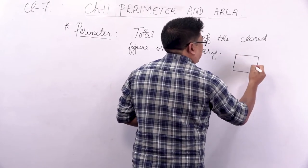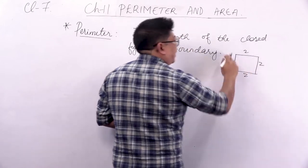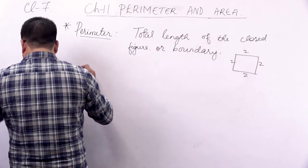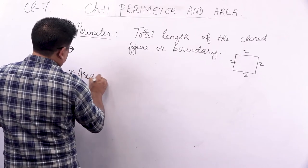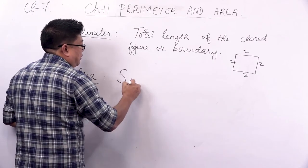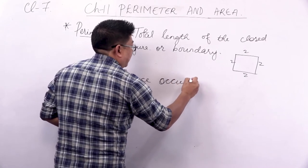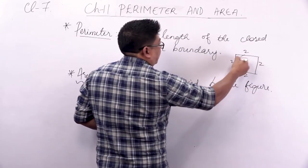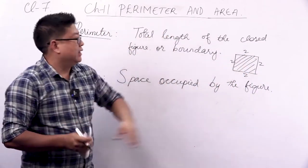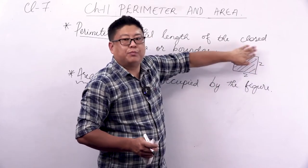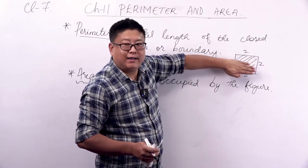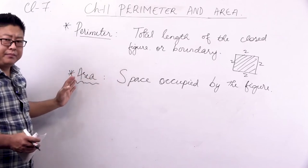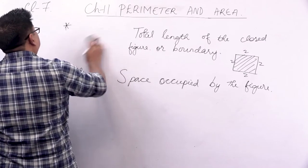We have already learned about area also. Area simply means the space occupied — the space enclosed by the boundaries of a closed figure. Here the boundaries are your sides: 2, 1, 2, and 1. The inside part of the square is your area. The addition of all the sides gives you the perimeter, while the inside space gives you the area.